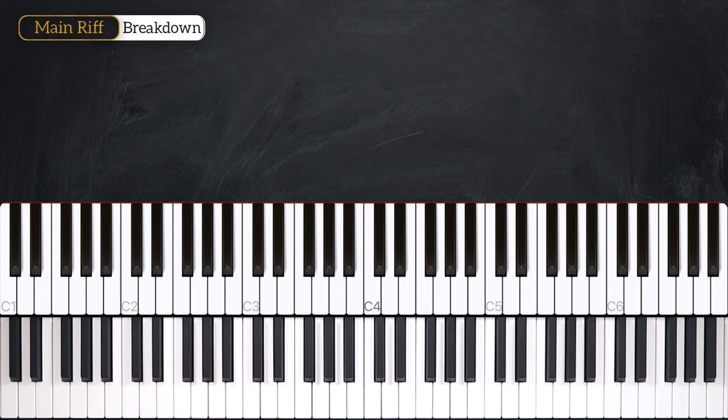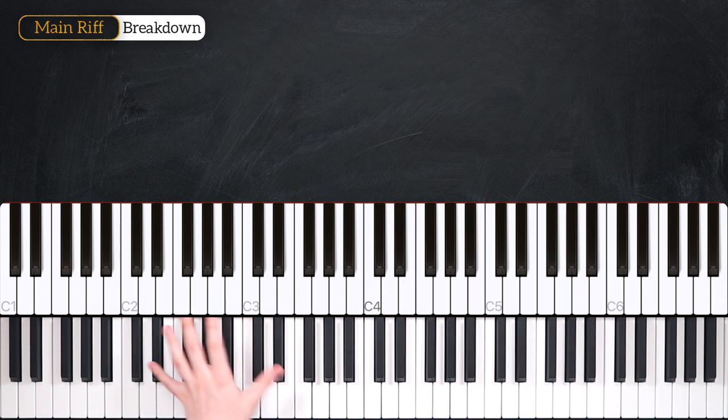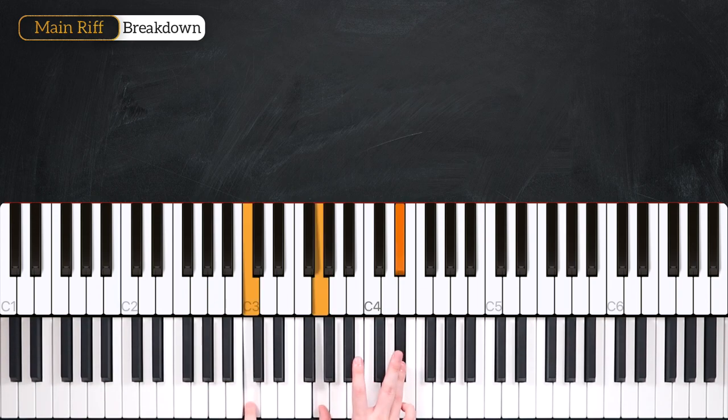Then in our final bar, we're going to play that G minor seven chords. And with the exact same rhythm, we're going to start on G. We're going to walk up Eb, F and G. And then just as before, on the and of beat four, we're shifting straight back down to our C minor chord to start that loop again.